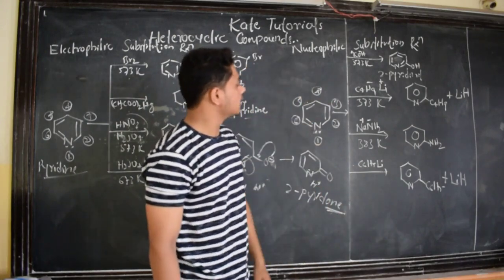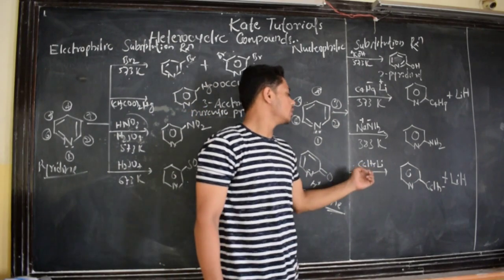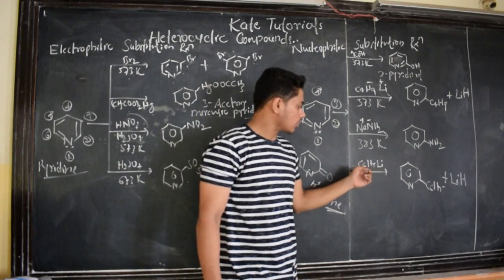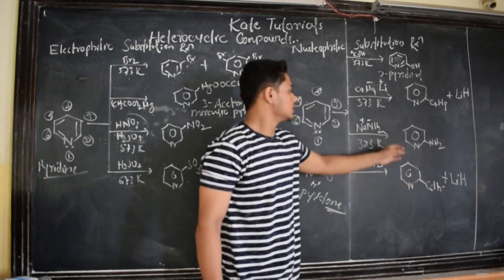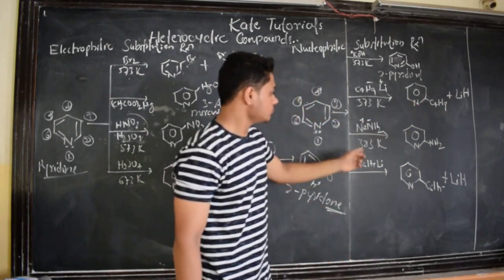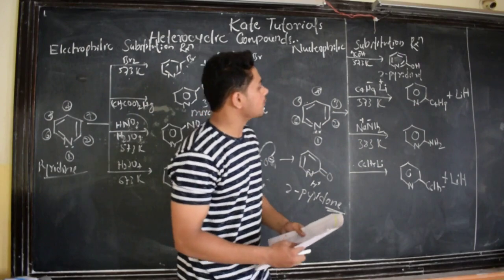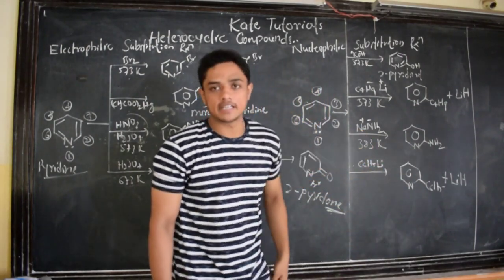This is about what? Nucleophilic substitution reaction. Here also we have organometallic compound, organometallic C6H5. 2-phenylpyridine we get. Here it is 2-butane pyridine. Here we got 2-amino pyridine by treating NaNH2 at 383 Kelvin.